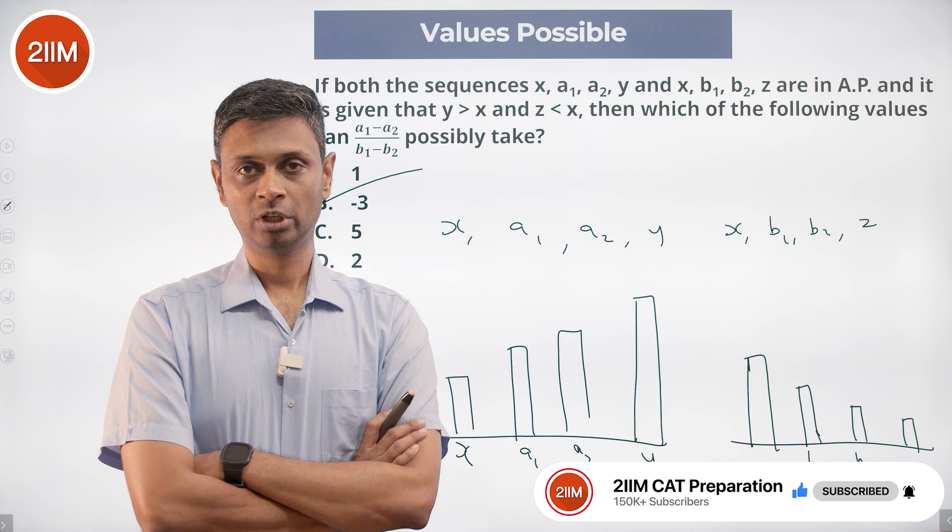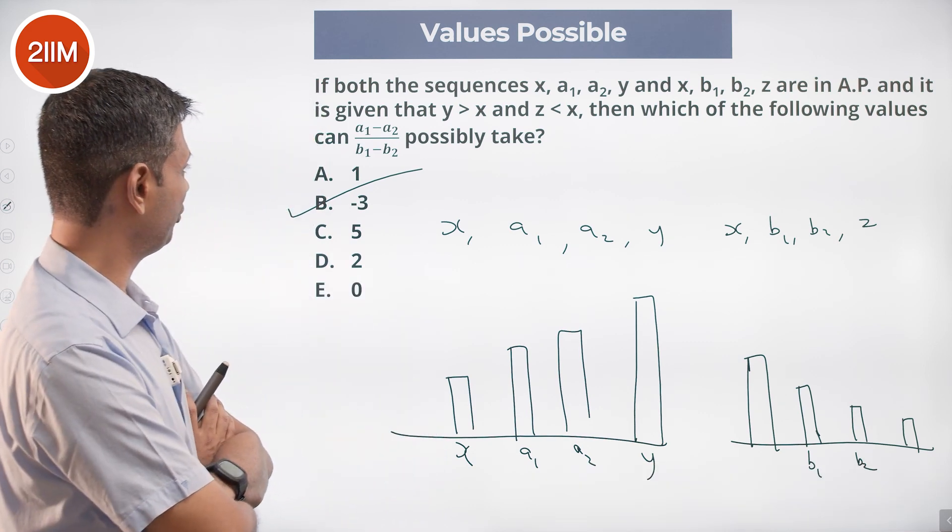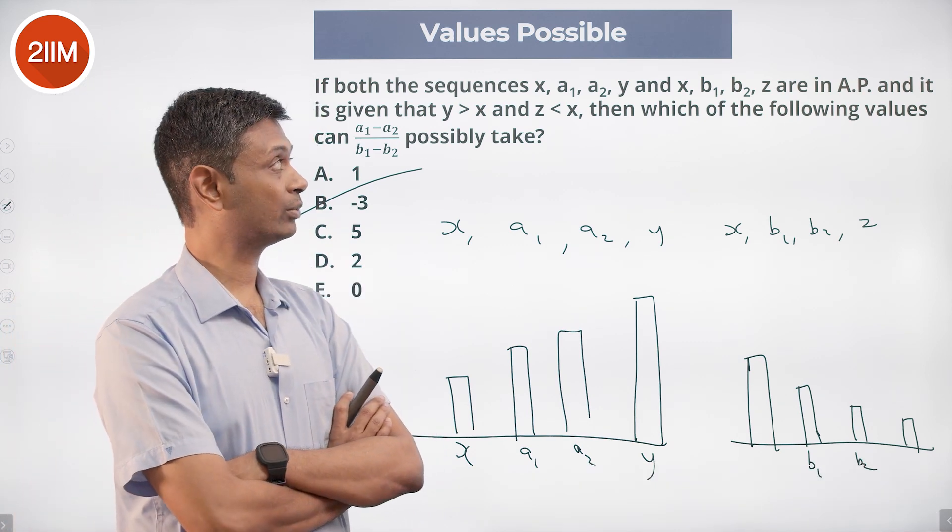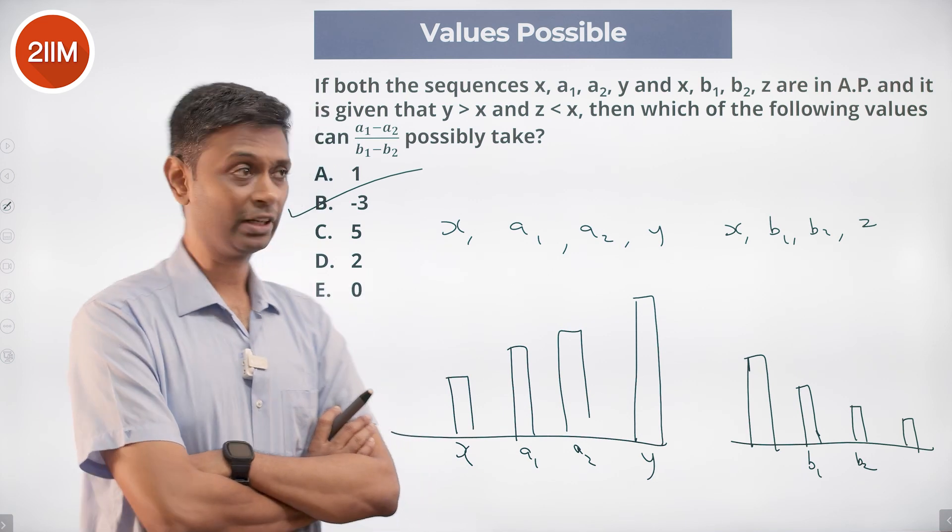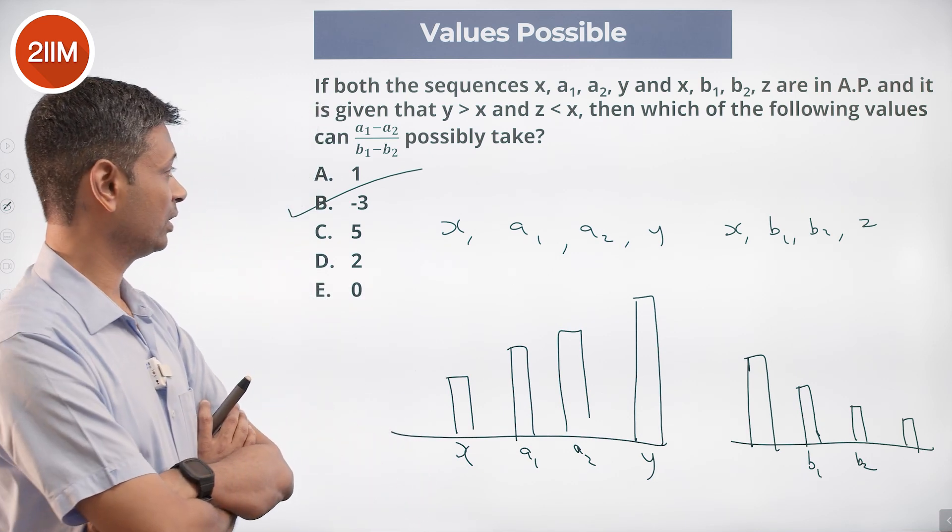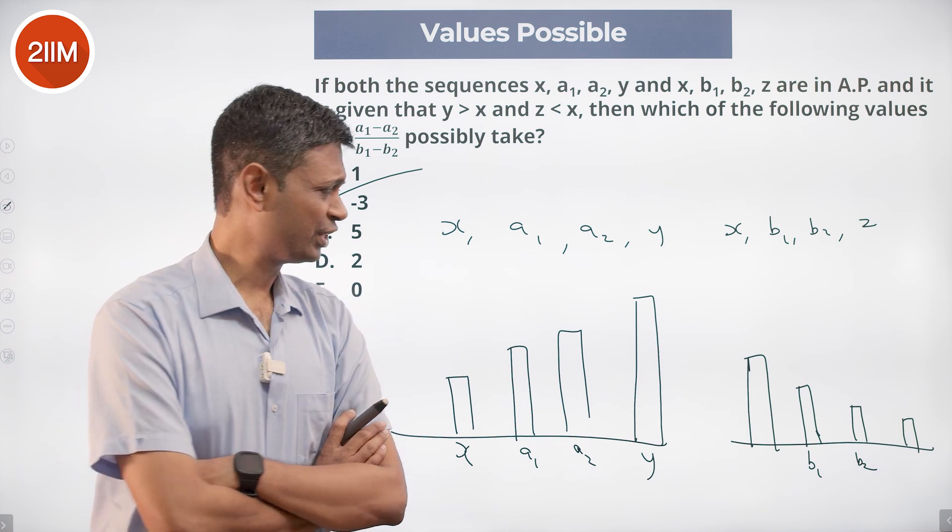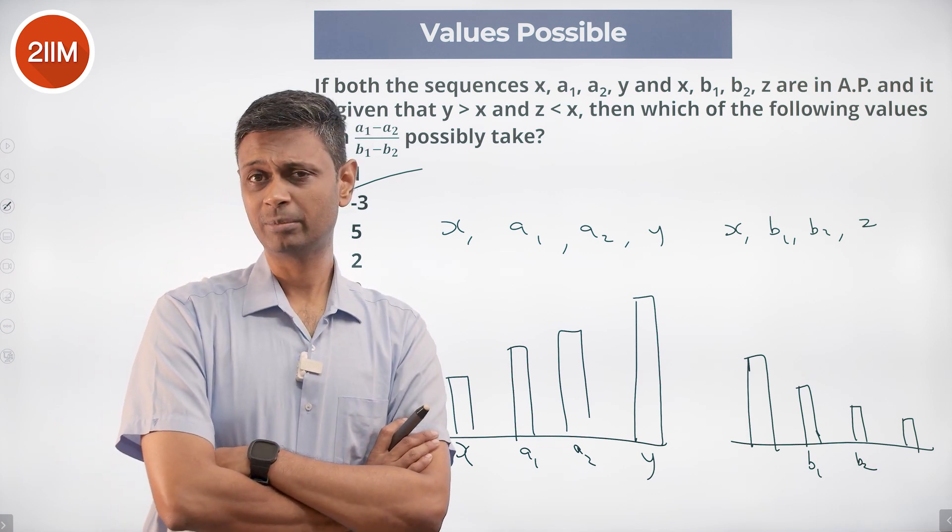It cannot be 0. If it were 0, a1 minus a2 would be 0, then x would be equal to y. Not 0, definitely. It has to be negative. That should be minus 3. One is an increasing AP, other is a decreasing AP.